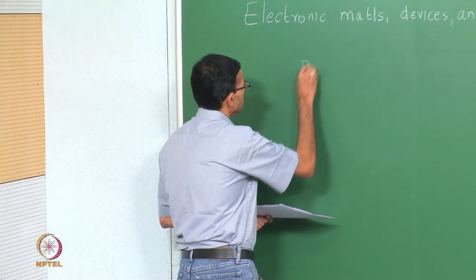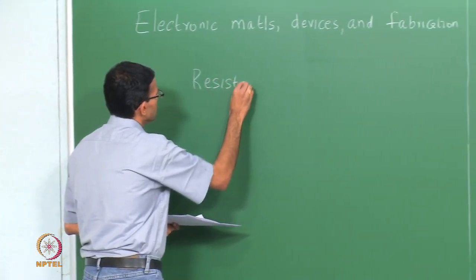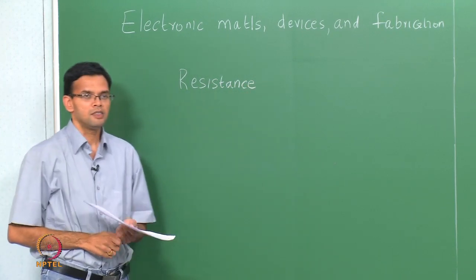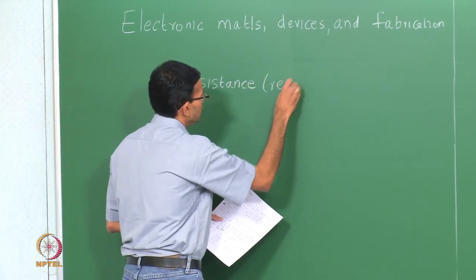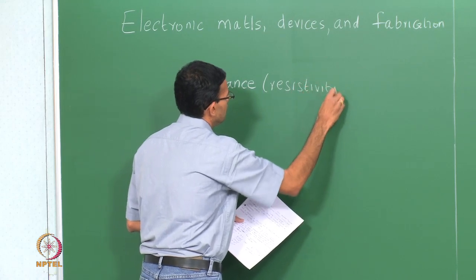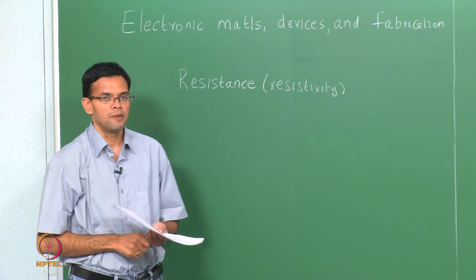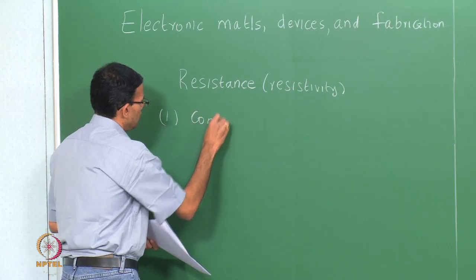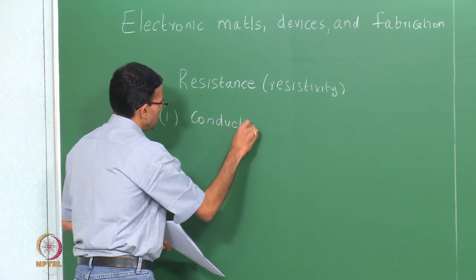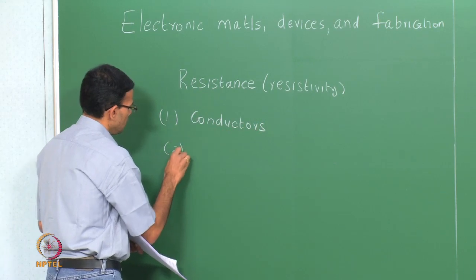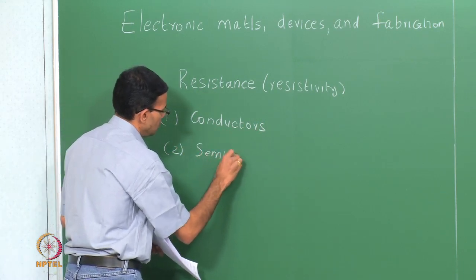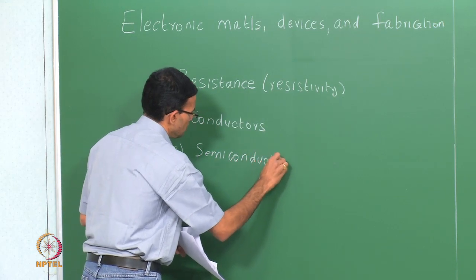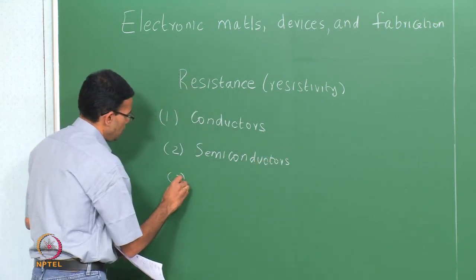When we think of electronic materials, the first property that comes to mind is resistance. Resistance, or resistivity, can be used to separate materials into three categories: conductors, semiconductors, and insulators.